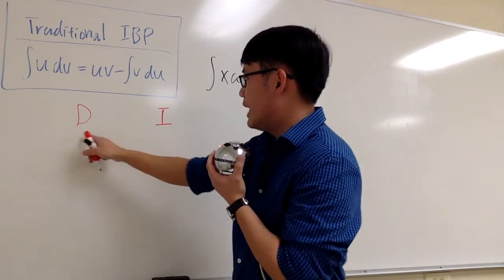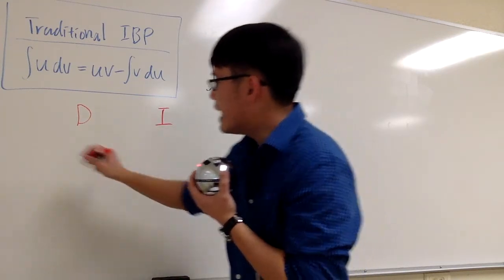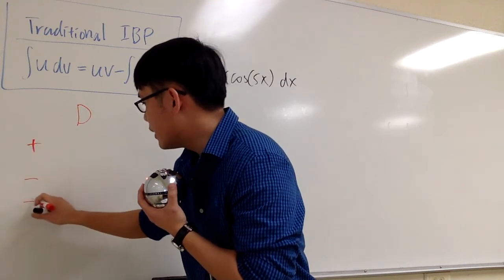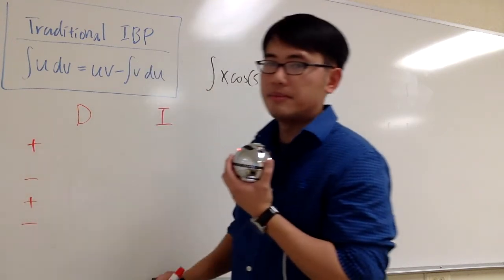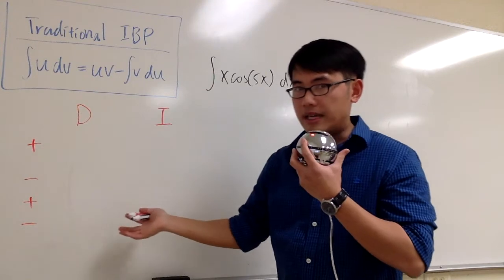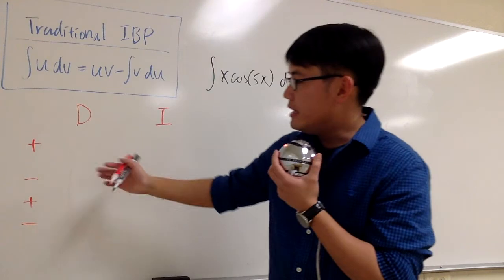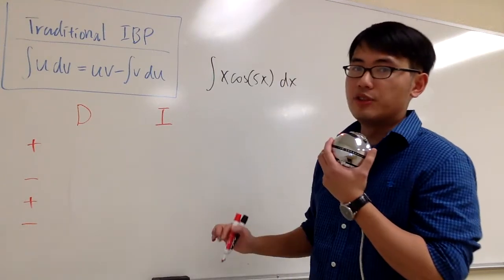So this is going to be the setup. We have the D and the I, and then on the side we are going to attach some signs. We start with plus, and then the sign alternates. So plus, minus, plus, minus. I don't know how many I need, but let's just put plus, minus, plus, minus just to get ready. Maybe I need more, maybe not, but this is a good setup.